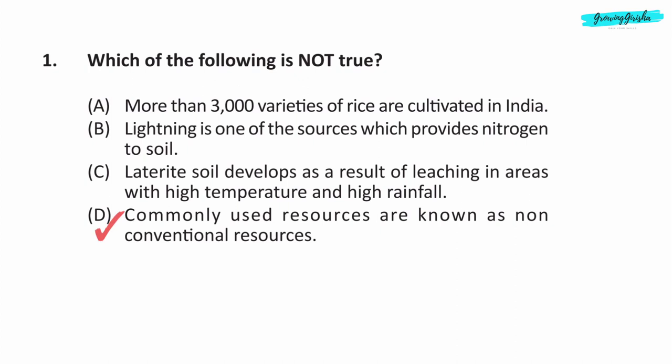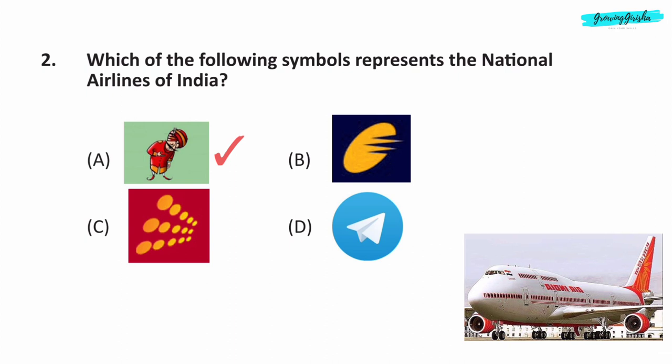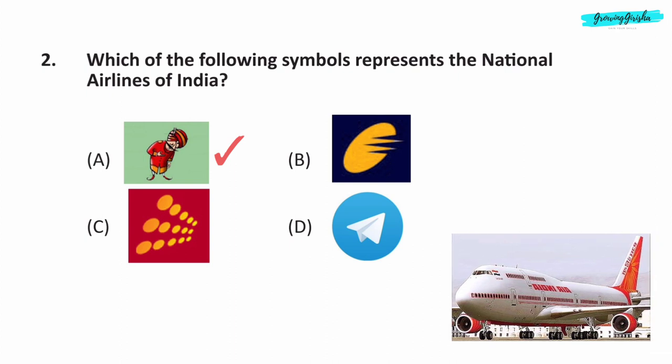Correct answer is option D. Question 2. Which of the following symbols represents the National Airlines of India? The symbol in option A represents Air India, which is the National Airlines of India. Option B represents Jet Airways. Option C represents Spice Jet. Option D represents Telegram, which is a communication application. So correct answer is option A.